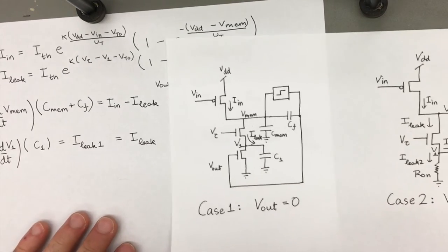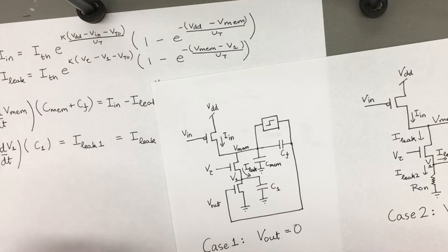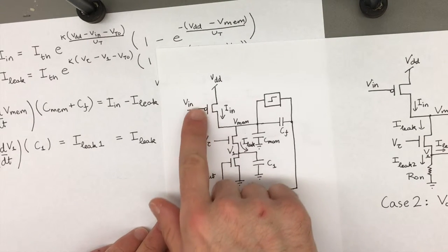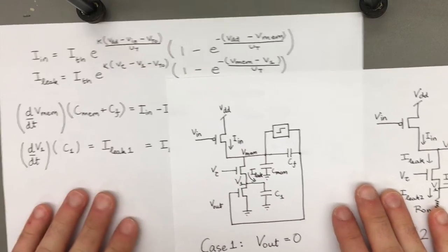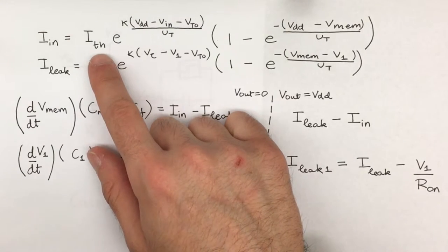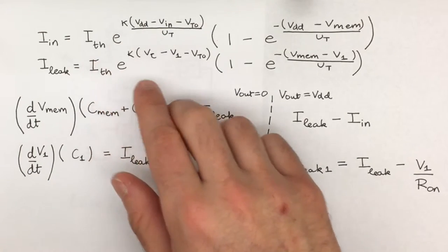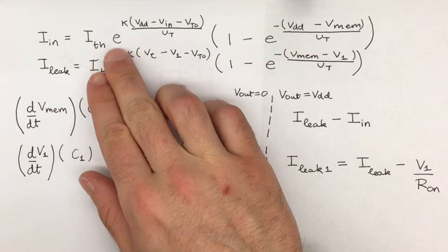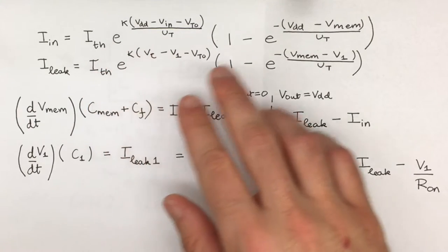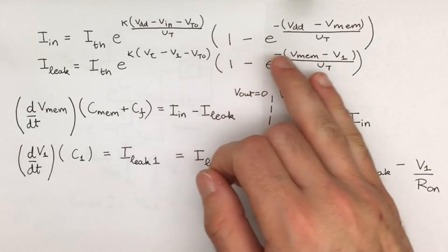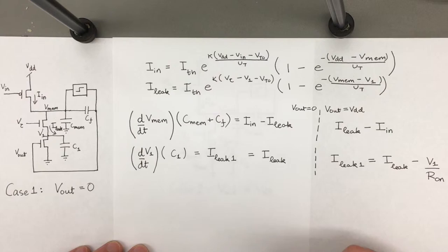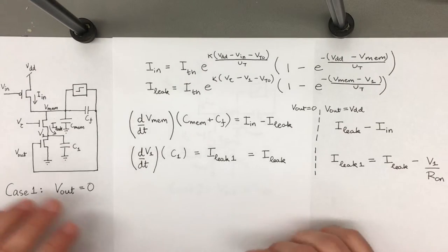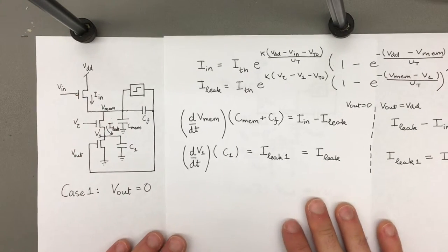We can say that Iin for both of them is going to be the same for both by this equation. This equation has the threshold saturation current for a MOSFET, and you multiply it by an exponential including the gate-source voltage and an exponential with the drain-source voltage. This current equation defines that of the input current source.